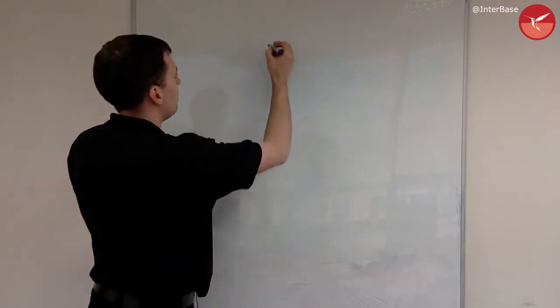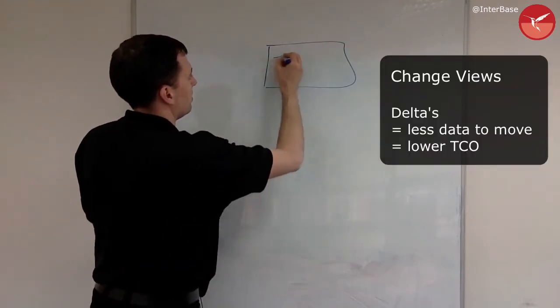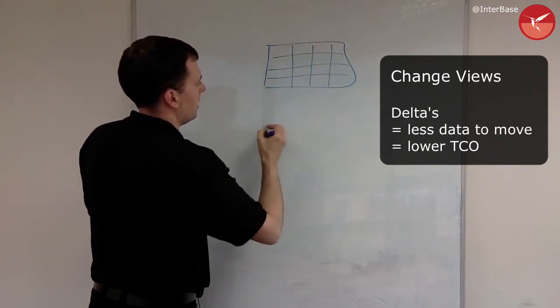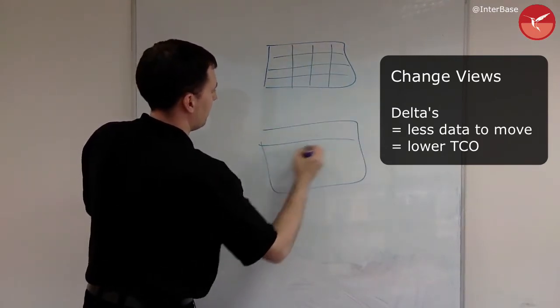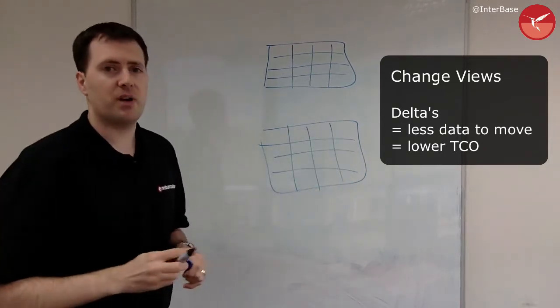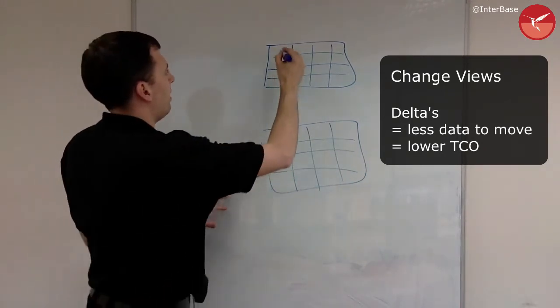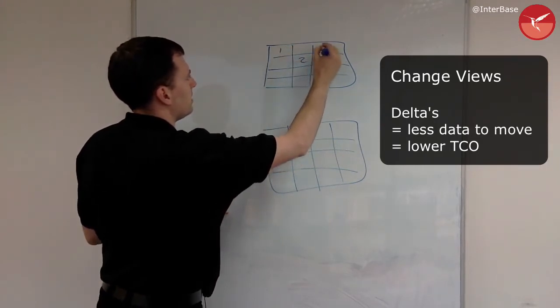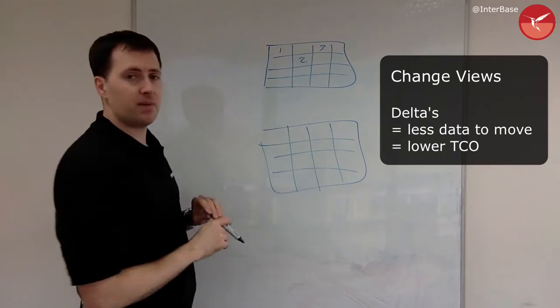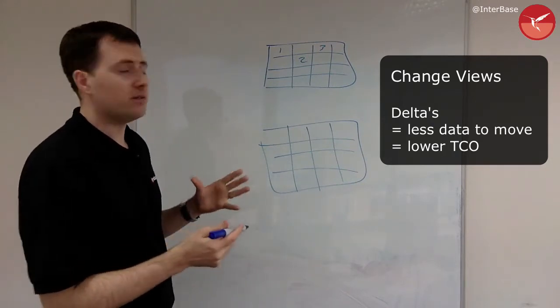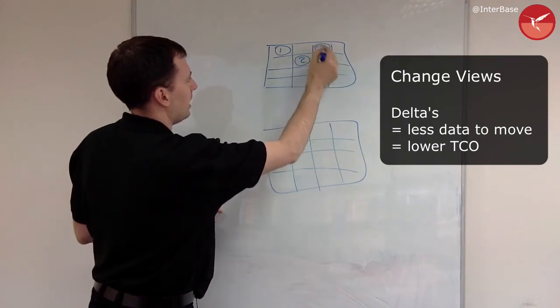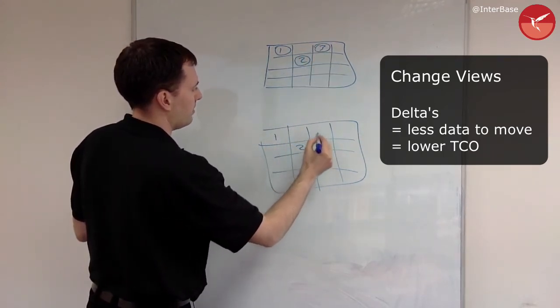So let's imagine we've got our database here and we're just going to quickly draw out some columns and we'll have the same data being deployed out to my device. Now if I make a couple of changes here, when I come and ask the database for the data, it should be able to tell me that only these fields here have changed. So I can then go and update those.